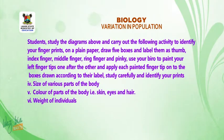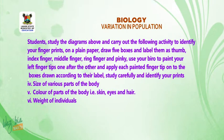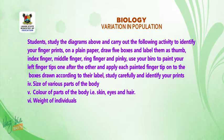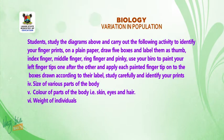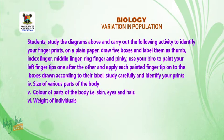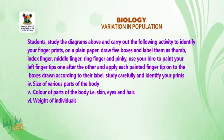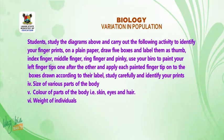Students, study the diagrams above and carry out the following activity to identify your fingerprints. On a plain paper, draw five boxes and label them as thumb, index finger, middle finger, ring finger, and pinky. Use your bio to paint your left fingertips one after the other and apply each painted fingertip onto the boxes drawn according to their label. Study carefully and identify your prints.